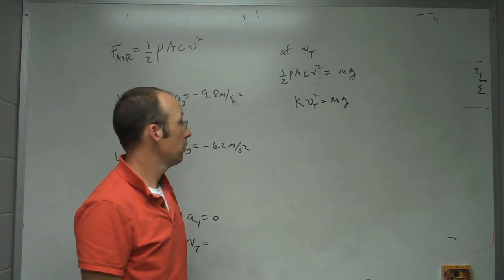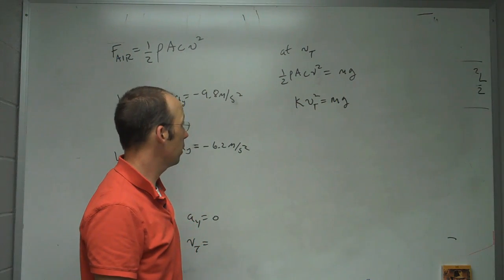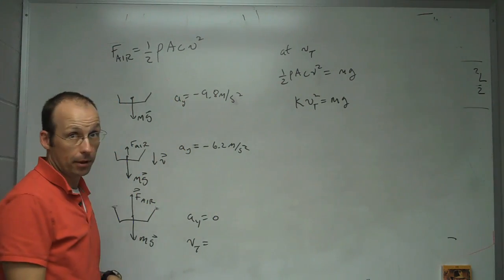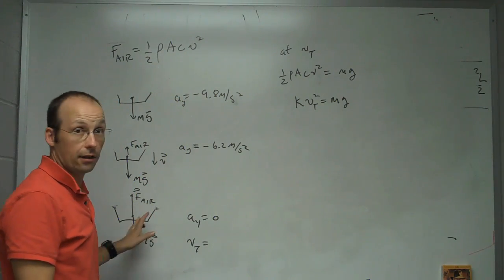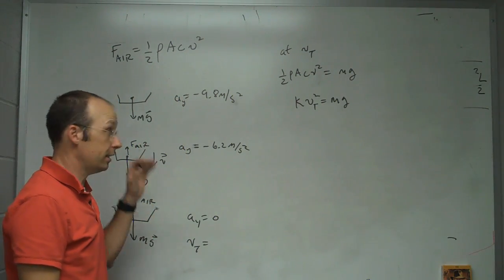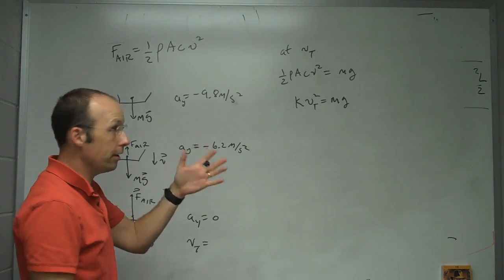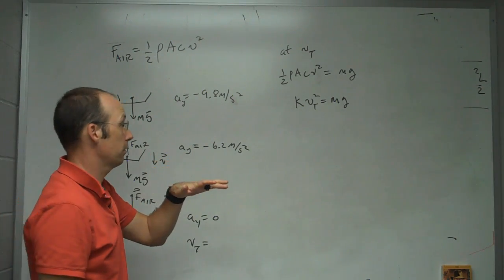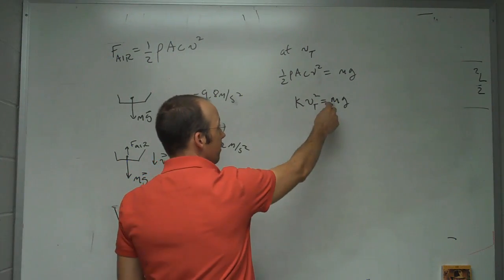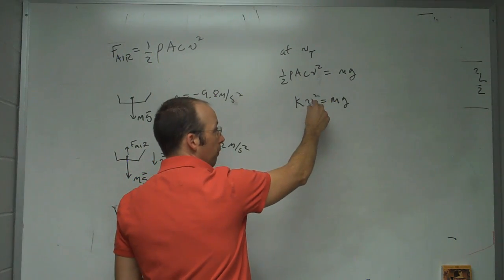So how do we do that? Well, if I take a coffee filter and I drop it and I let it accelerate and it reaches terminal velocity, then I can measure the terminal velocity with the motion detector. And then I can change the mass and measure the new terminal velocity, and change the mass, and I can change that.